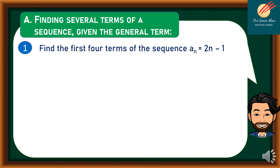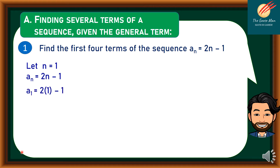There are two ways to find the pattern or sequence. The first is finding several terms given the general term. Consider Problem 1: find the first four terms of the sequence where a sub n equals 2n minus 1. We let n equal 1, substitute into the general term: a sub 1 equals 2(1) minus 1, which equals 2 minus 1, so the first term equals 1.